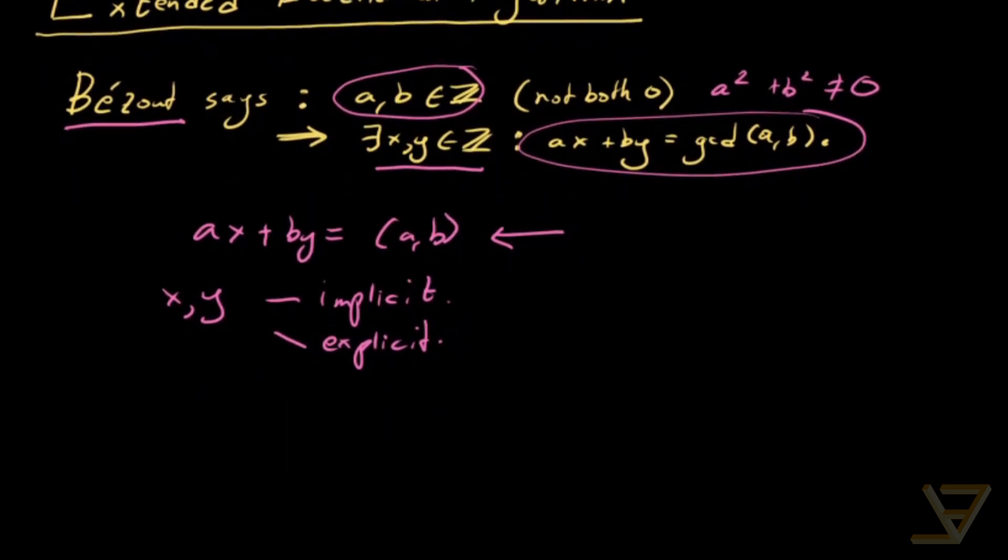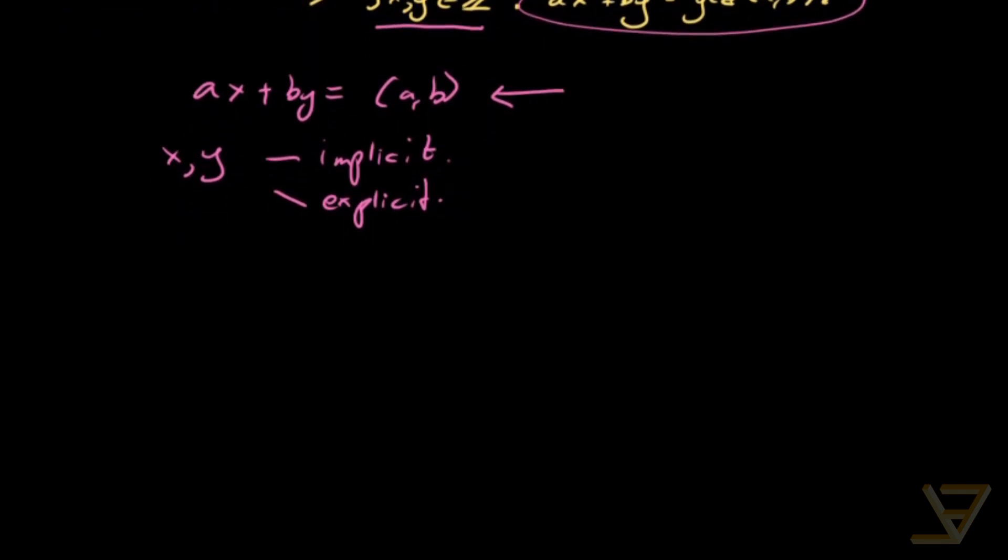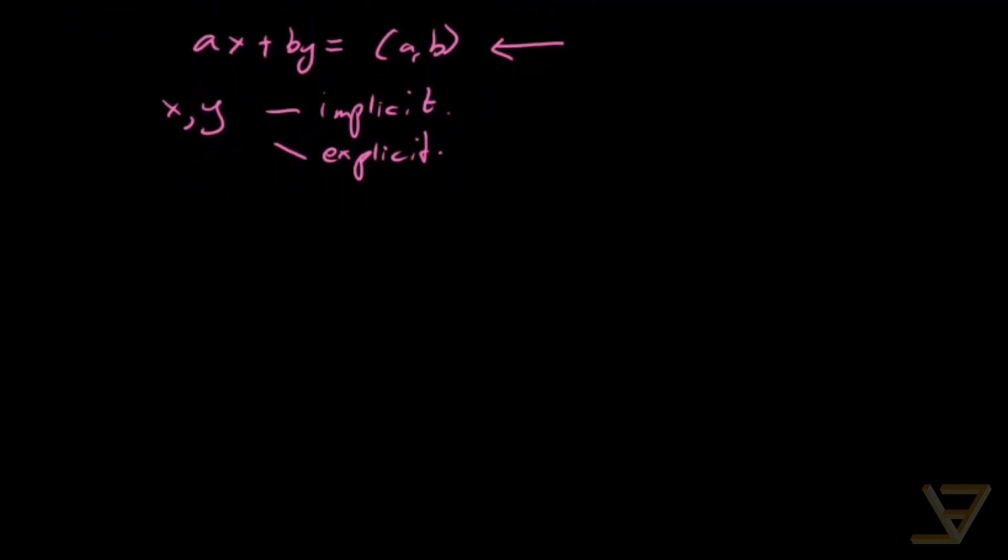That is related to the Euclidean algorithm because we can use the sequence of quotients and remainders that come up in the Euclidean algorithm to actually find x and y.